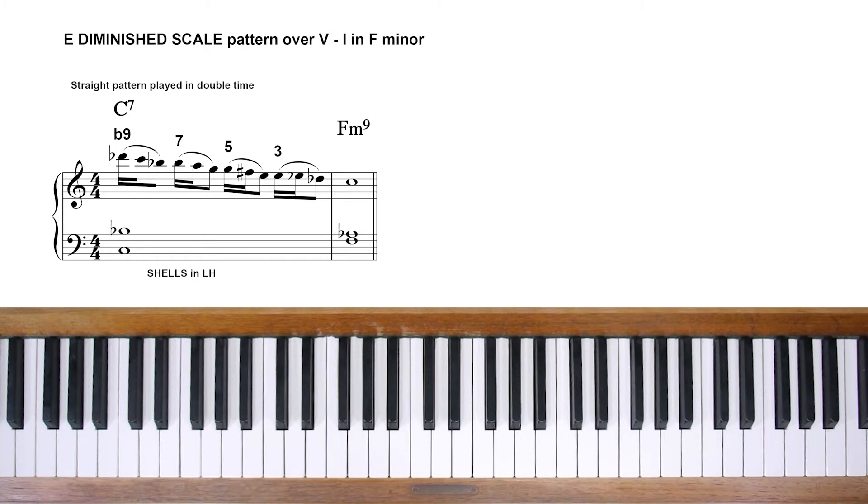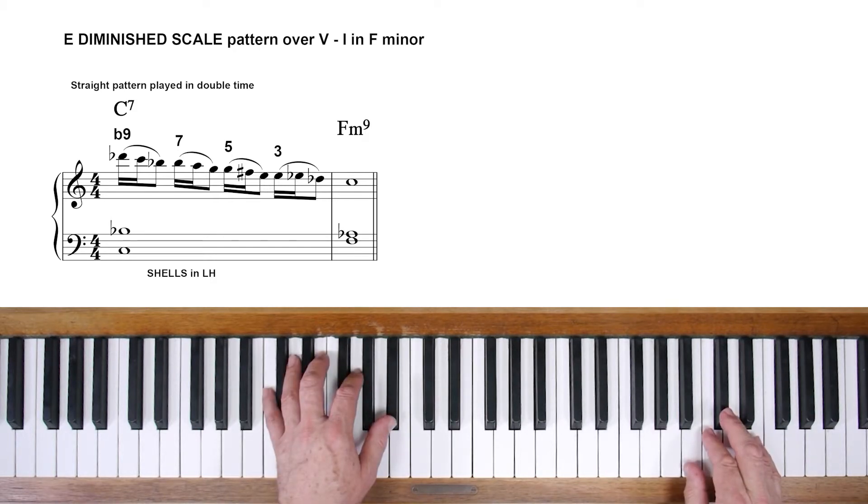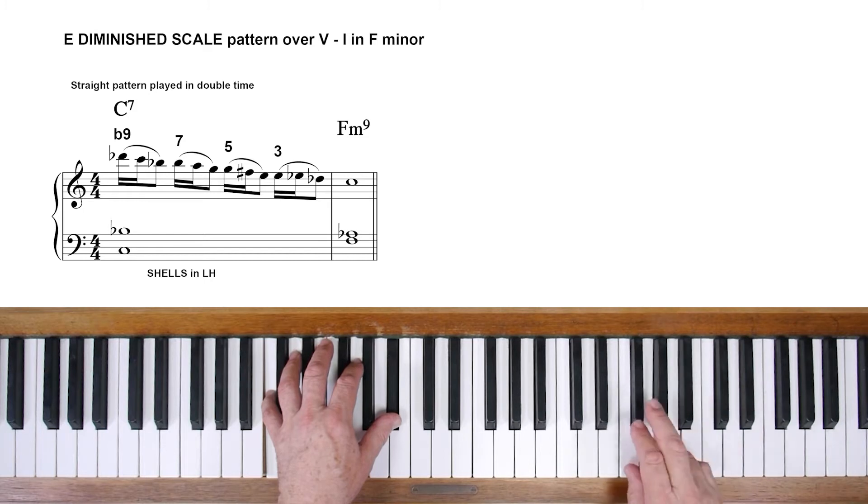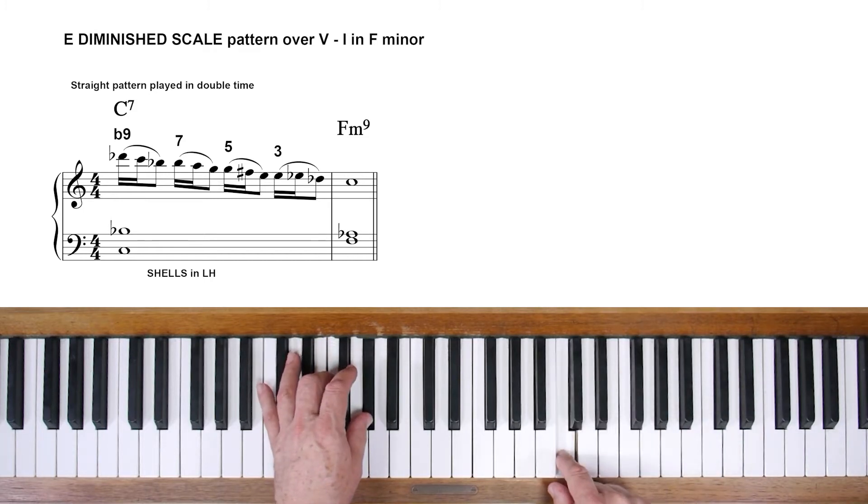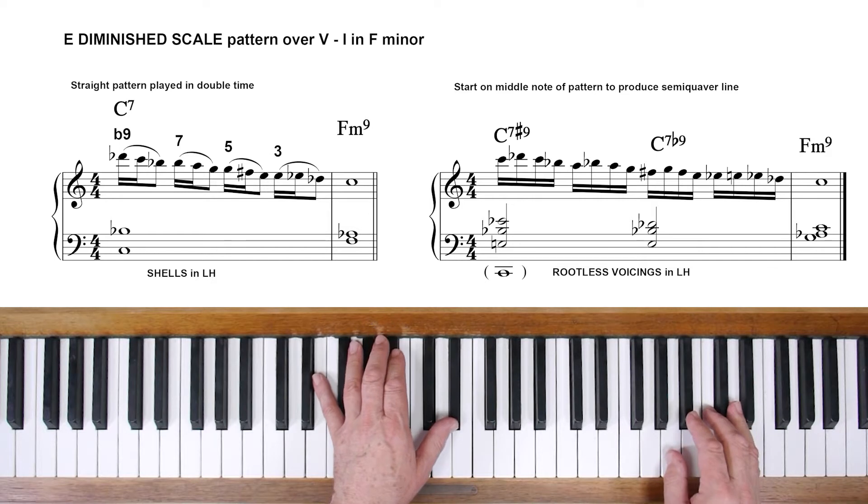We can generate another three note motif by taking the practice pattern we started with. Let's play it in sixteenth notes so that it fits into a single bar. To turn this into a continuous sixteenth note line, try starting on the middle note of each group like this.